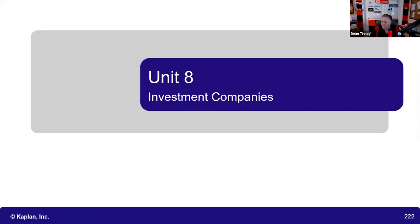So we got mutual funds, Rule 144, Rule 147. Rule 144 is about how we turn unregistered securities into registered securities. You didn't get them in a public marketplace because they have these red letters on the certificate that say 'stop transfer.'